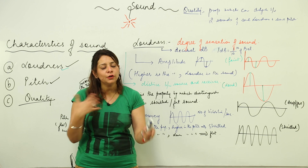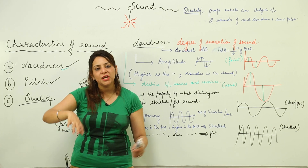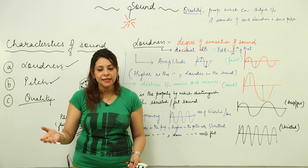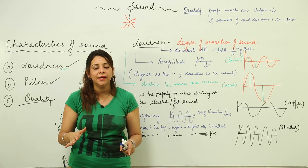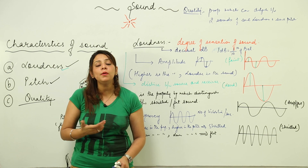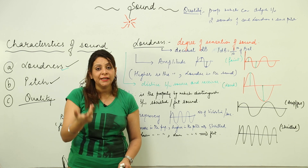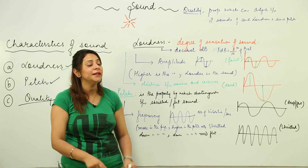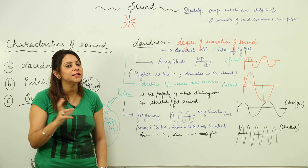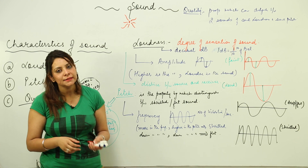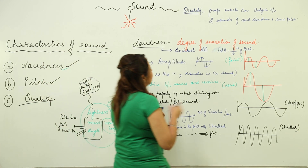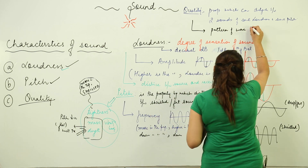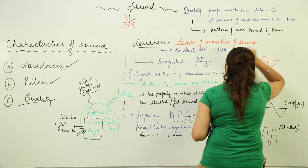Another example: suppose there is a dark room and your friend Amit is inside and calls your name. How do you distinguish that it is Amit? Even though there is darkness and you cannot see Amit inside, you can still make out that Amit is there because you recognise the voice — again by the same property, that is quality. Quality enables us to actually distinguish between two different sounds of the same loudness and same pitch. The reason we can distinguish is due to the pattern of the wave formed by them.